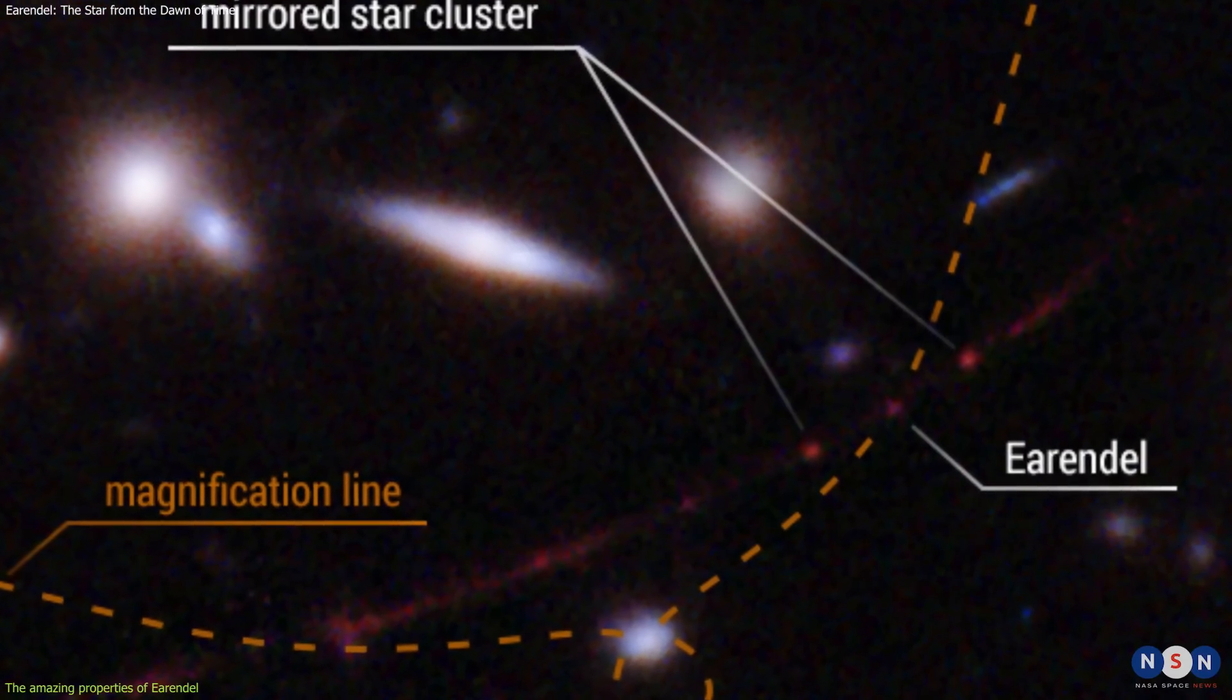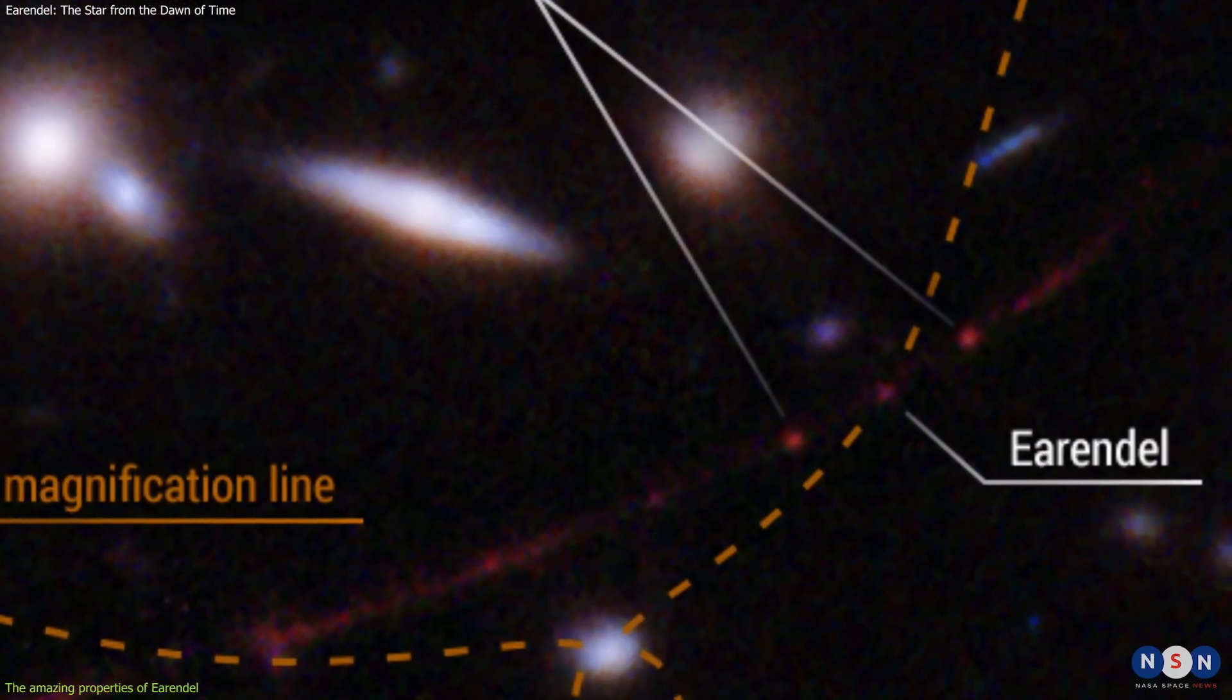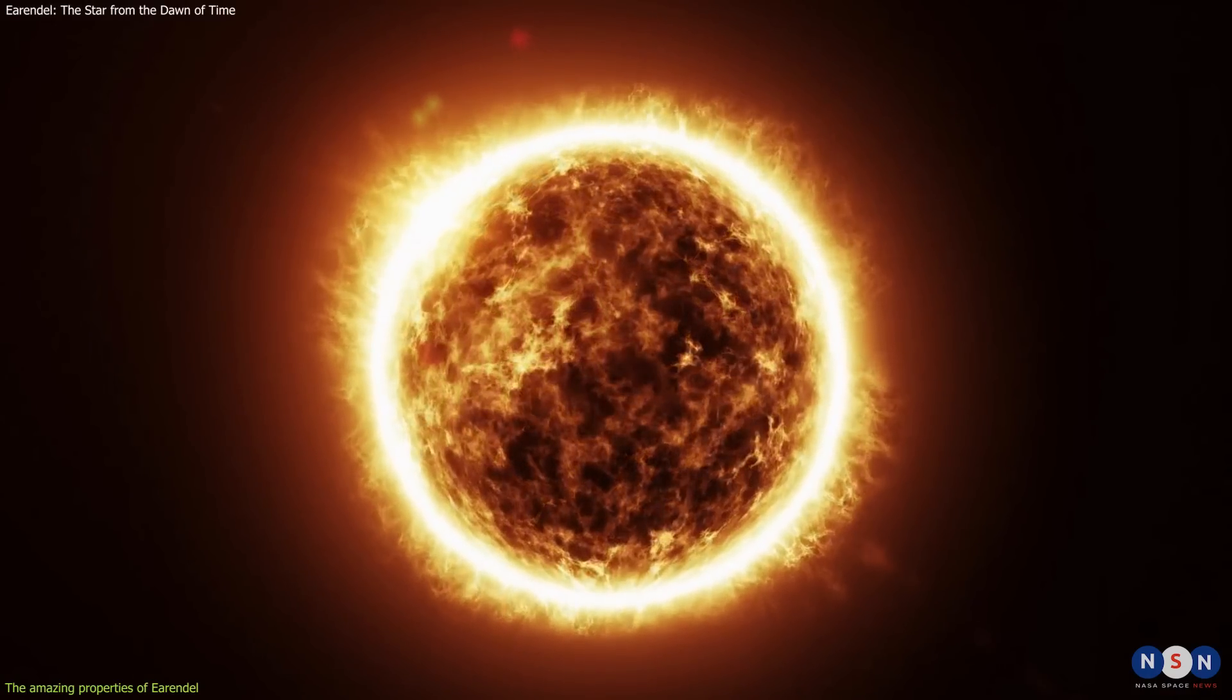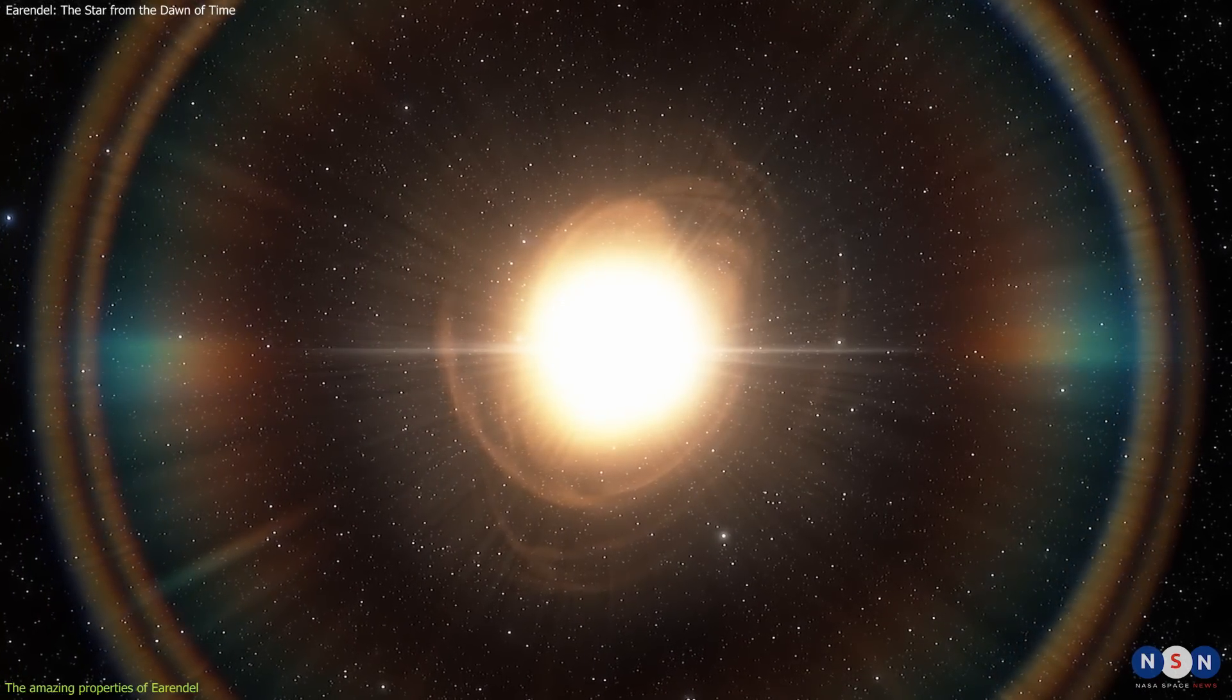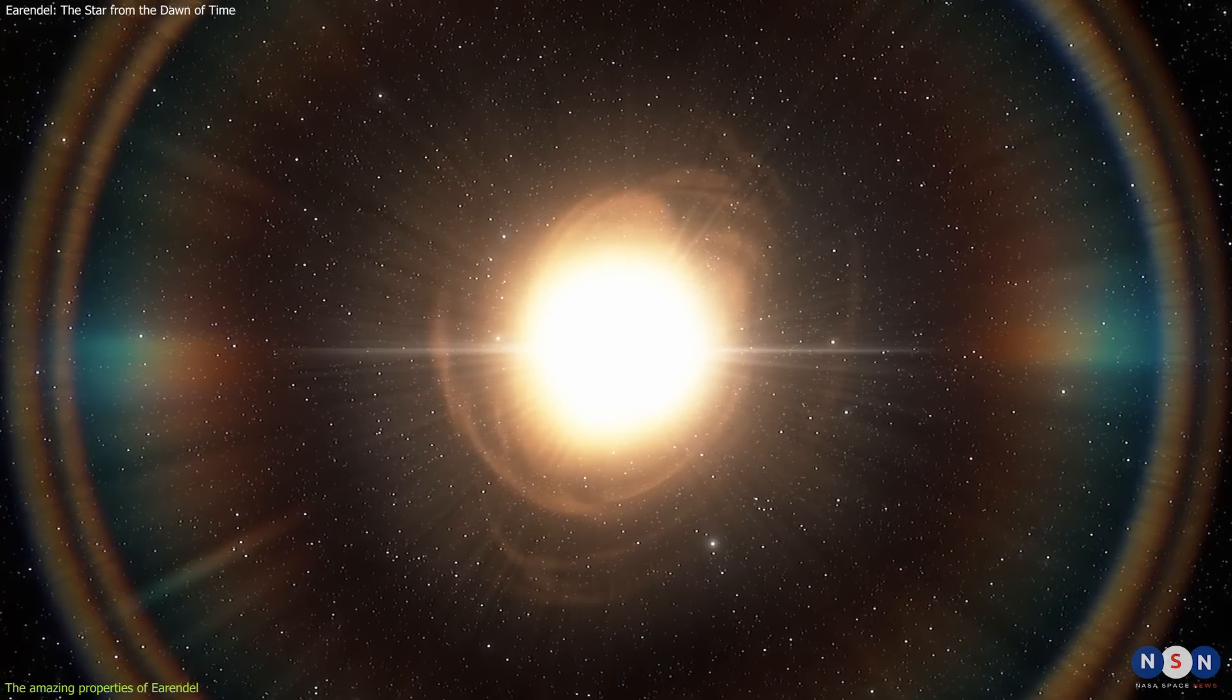This star has a surface temperature of more than 20,000 degrees Celsius, which is twice as hot as our sun. It also emits about a million times more light than our sun, making it one of the brightest stars in the universe.